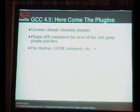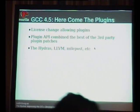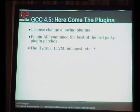GCC 4.5 is, to me, the most exciting release ever because it allows for plugins. For the first time ever, you can put your own code inside of GCC and do whatever you like. Before this, Stallman was afraid of opening up the compiler because somebody would write a proprietary extension and sell it. But that fear proved to be unreasonable given the progress it was stopping. As of GCC 4.4 they changed the license to allow plugins, and in GCC 4.5 they actually had an API for them.